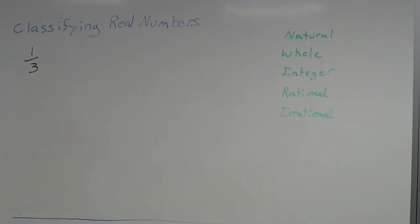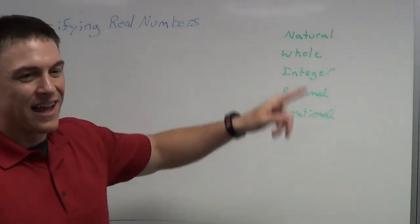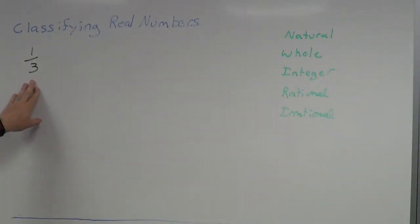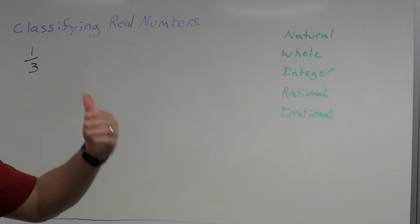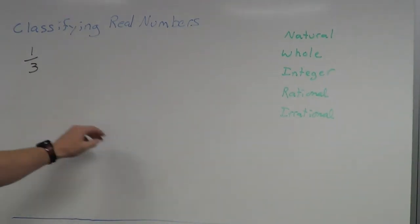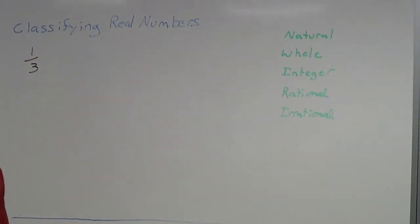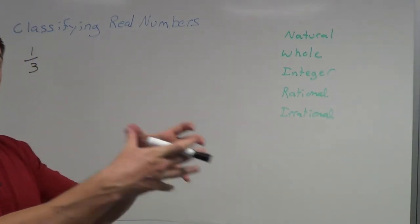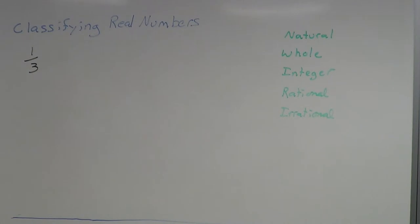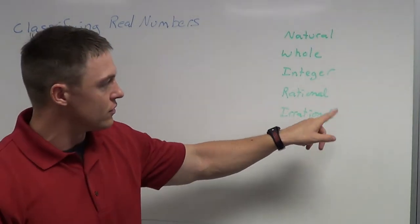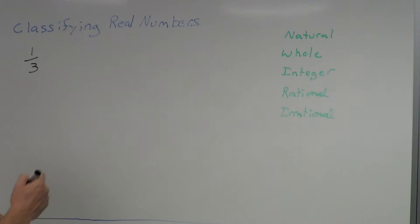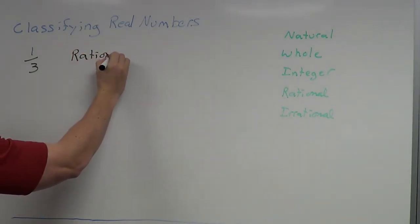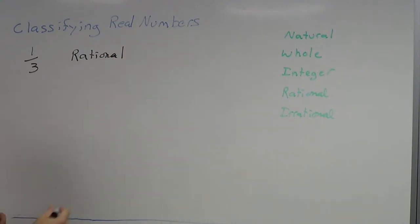Let's do the example of one-third. Is one-third a natural number? Natural numbers are counting numbers, so no — one-third is not a counting number, we don't count by thirds. It's not a whole number either. It's an integer? Again, integers are whole numbers and the negatives, so it's not an integer. Is it a rational number? Remember, rationals are fractions — and we actually found the first classification that works for one-third. It is a rational number.